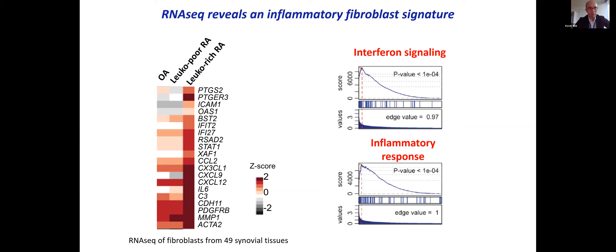A question from Michael Richter: did the anti-NRR antibody prevent arthritis or treat it? Are there reasons to think this target would be useful in patients who already have joint inflammation? In the paper we reported, we used a prevention model — we started antibody treatment as we induced arthritis. We're now doing experiments to test once arthritis is established whether you can still treat it with the Notch3 antibody and abrogate arthritis. So we're actively working on that.